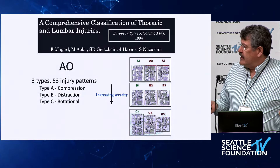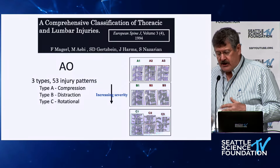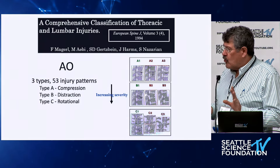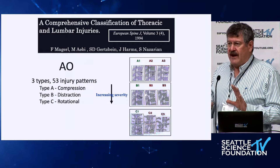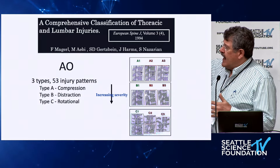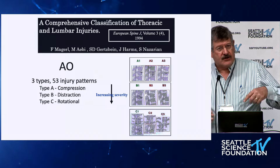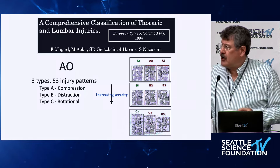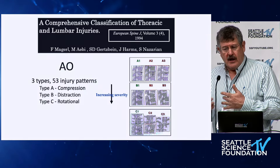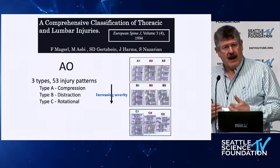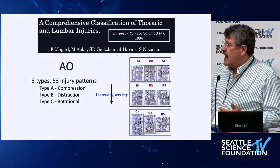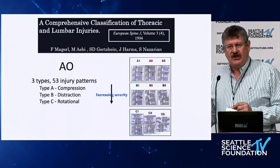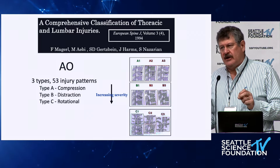Also in the 90s, the original AO classification came out. I think this is why some people have reluctance to using the new AO classification — because the original was so cumbersome, it ended up with 53 different patterns; you could have something like an A1.345 apostrophe. It was too detailed. The inter- and intra-observer reliability was very poor unless you just worked at the A, B, and C level — at that level it had decent reliability.